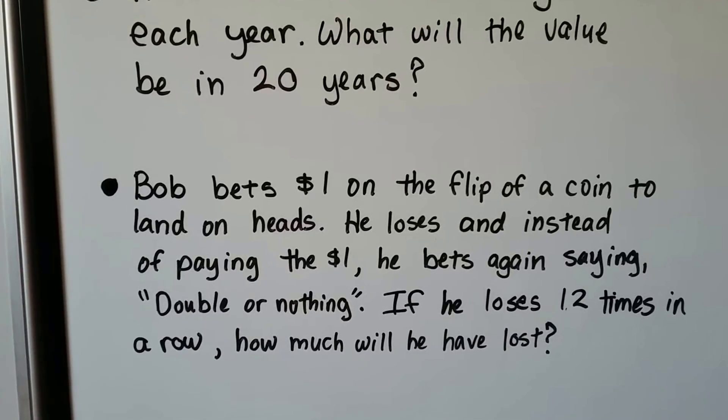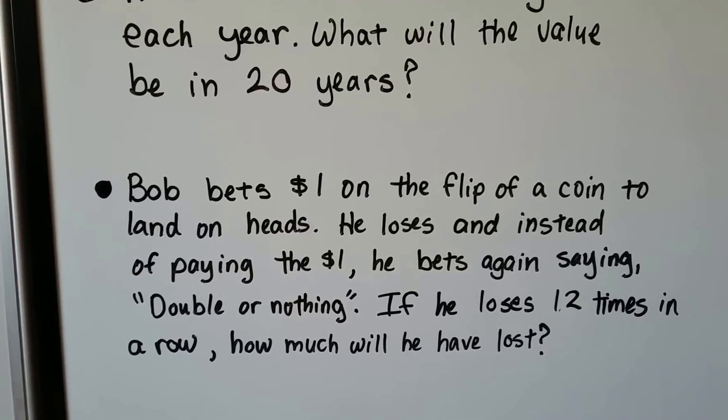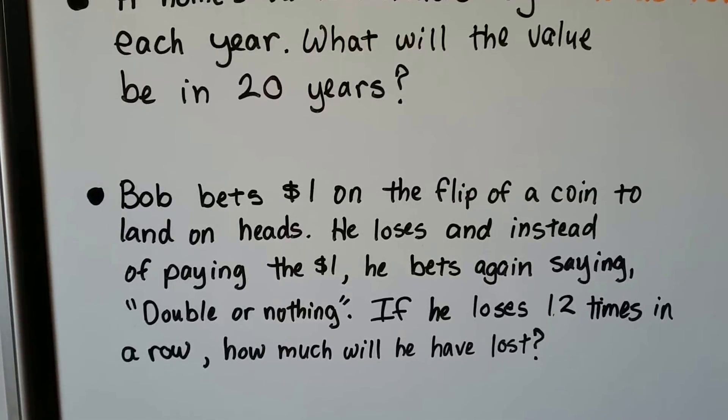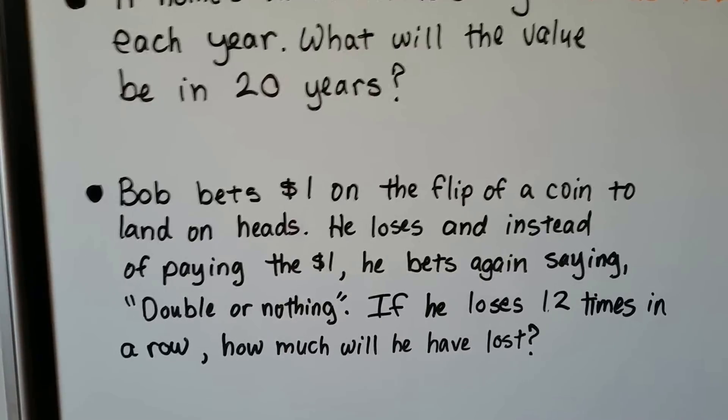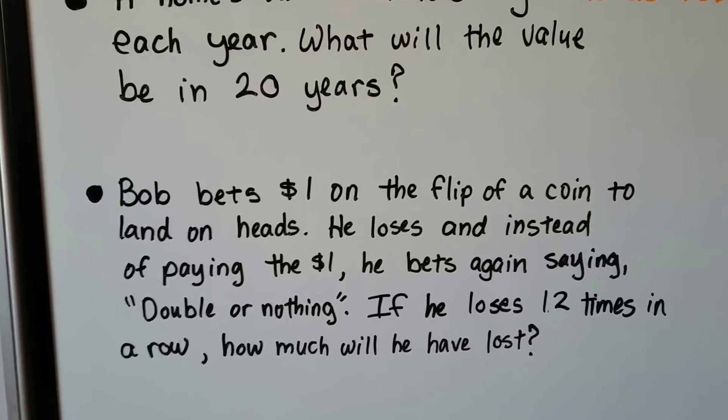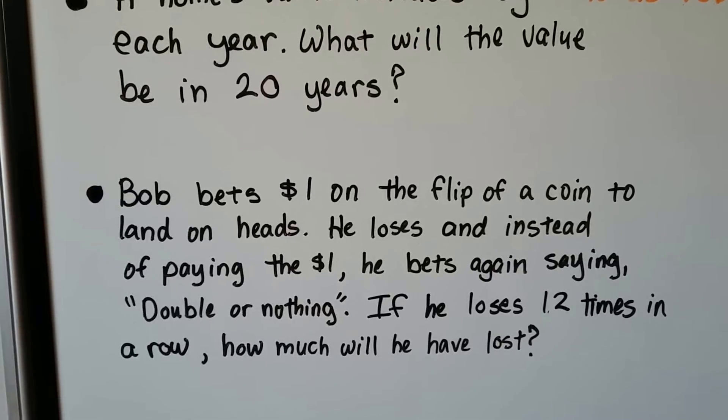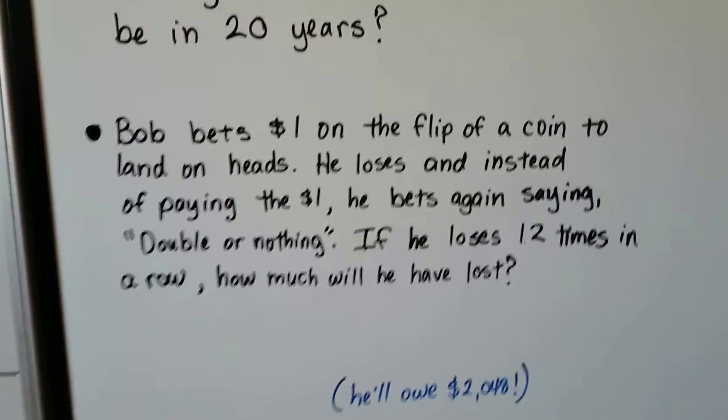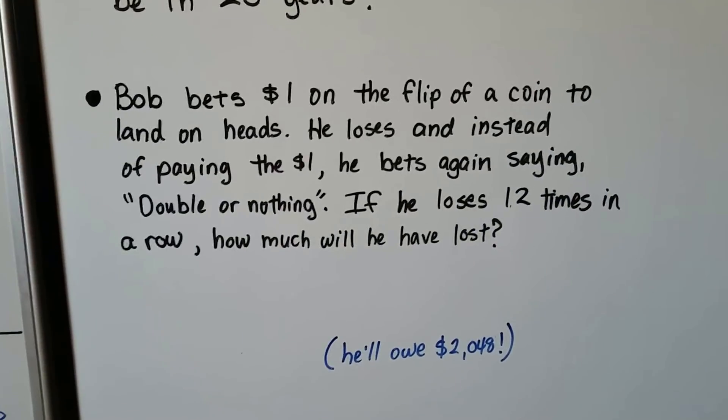Here's the fun one. Bob bets a dollar on the flip of a coin to land on heads and he loses. And instead of paying the dollar, he bets again saying double or nothing. If he loses 12 times in a row, how much will he have lost? We can do the nth term of a geometric sequence and figure that out. And actually the answer is he's going to owe $2,048.